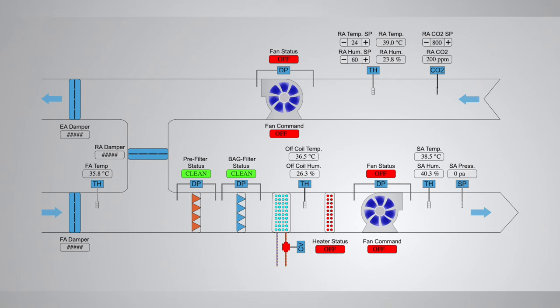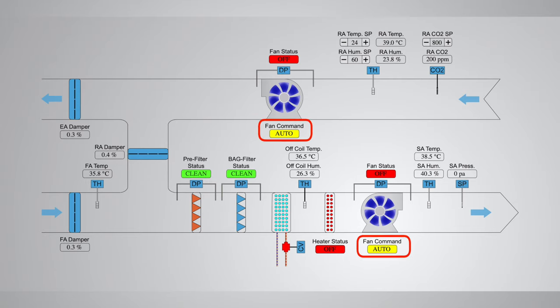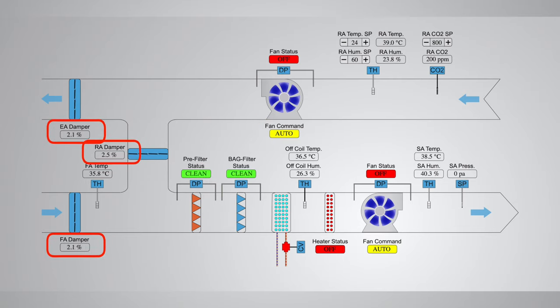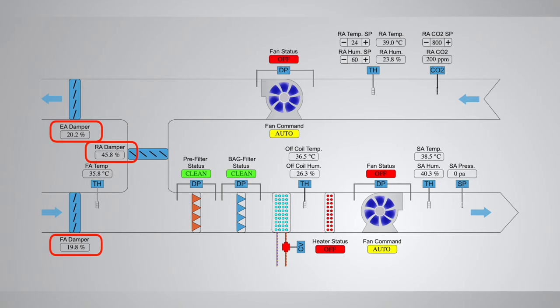When the supply and return fans are in the off condition, all control loops will be disabled and the damper actuators and cooling coil actuators will be in the closed position. Once the fans are put in auto mode, the BMS will issue an open command to the dampers. Since this is a recirculating type AHU, most of the air is recirculated to the space. The fresh air and exhaust air dampers are opened only 20%, and the return air damper is opened 100%.